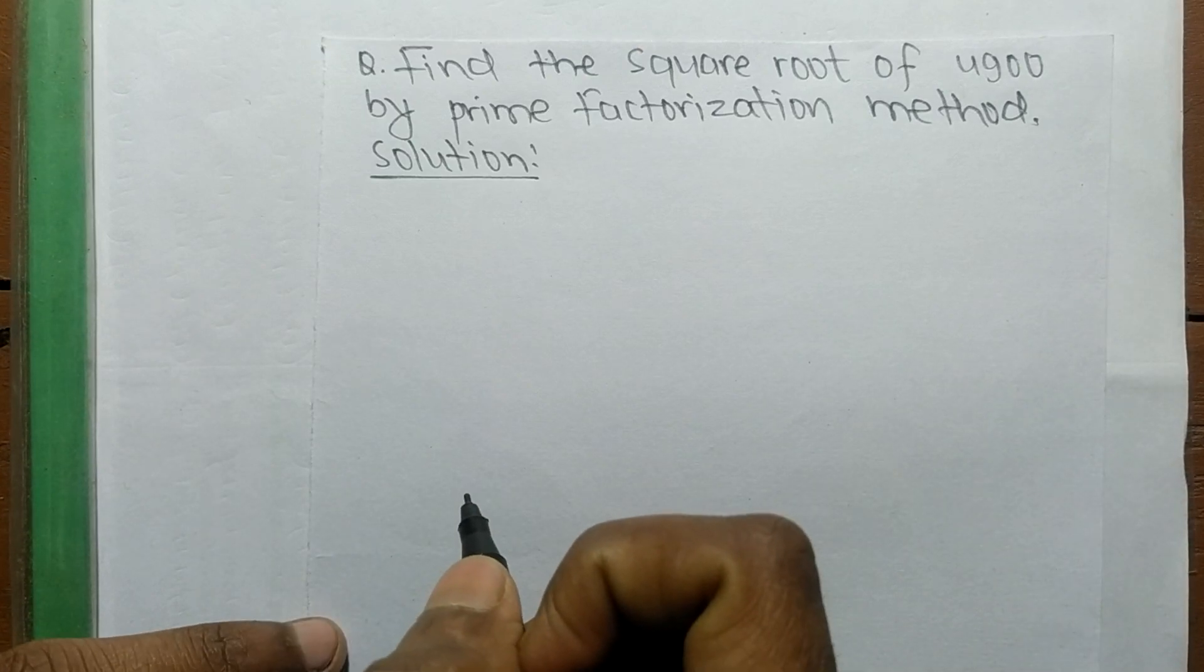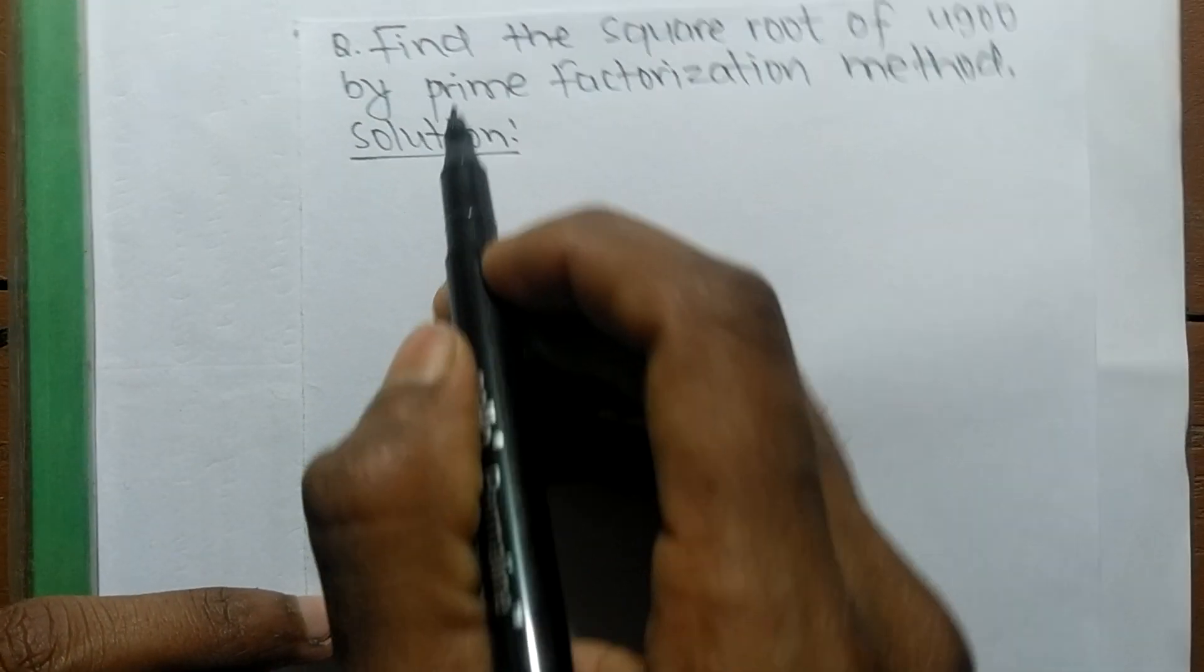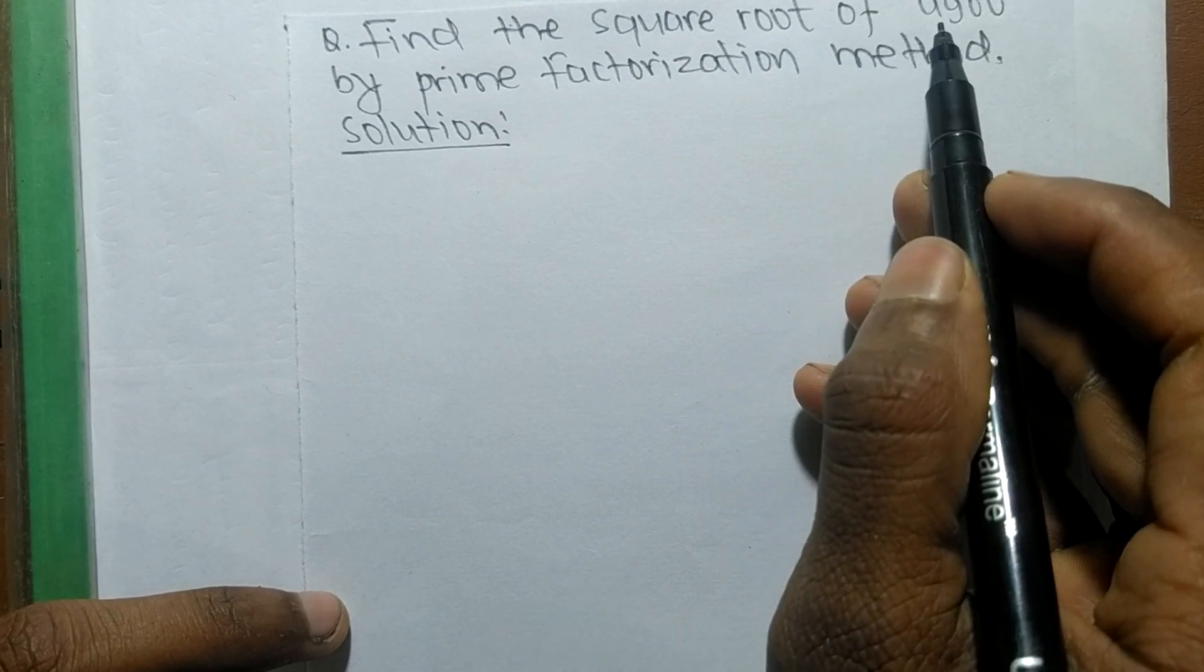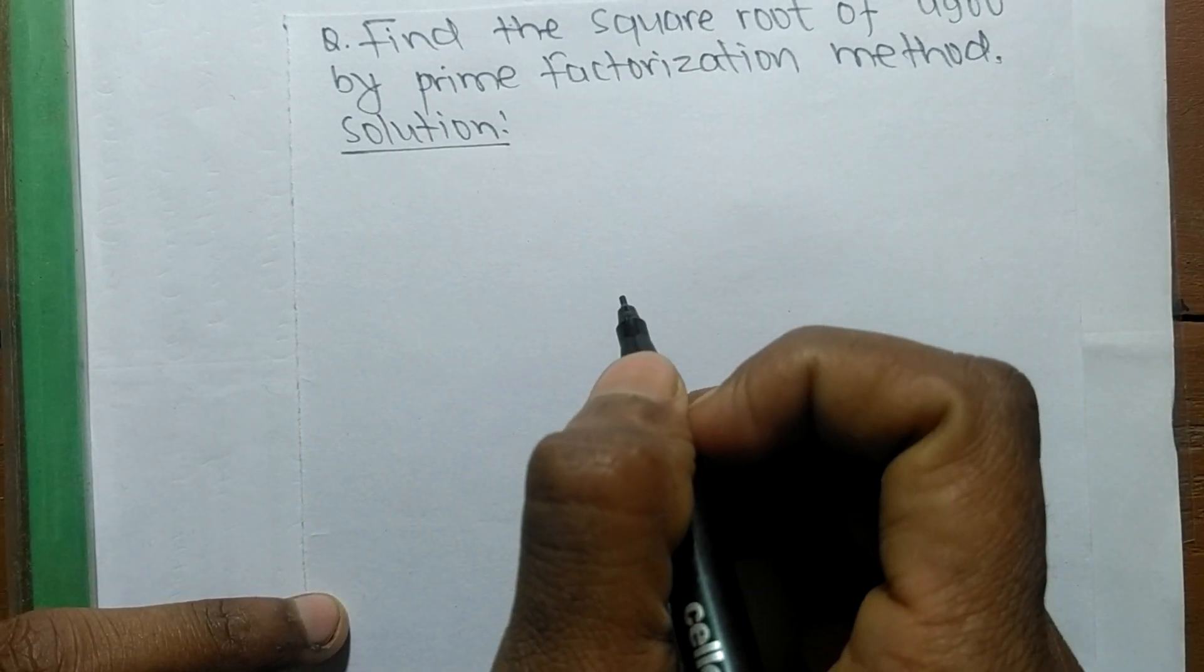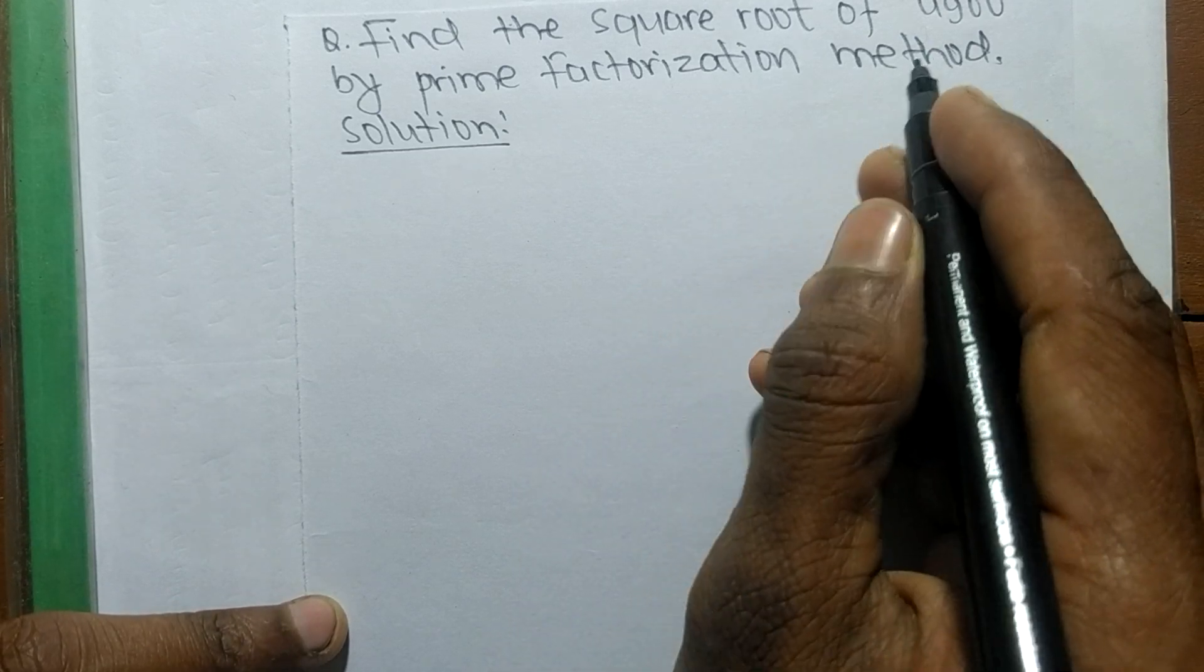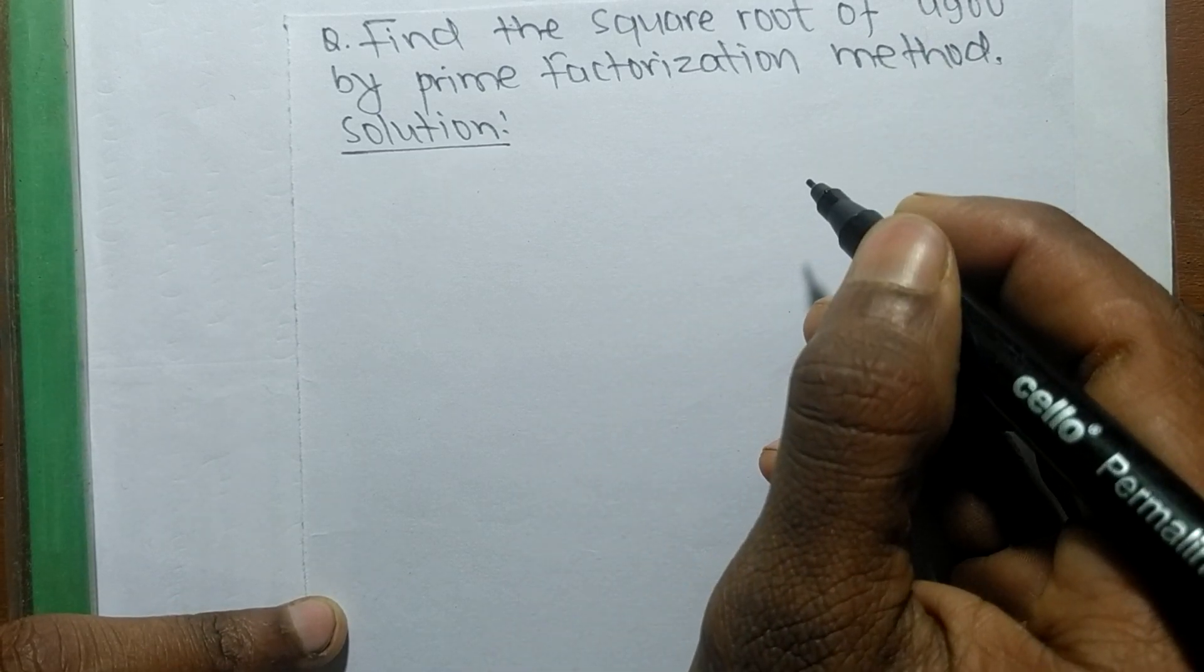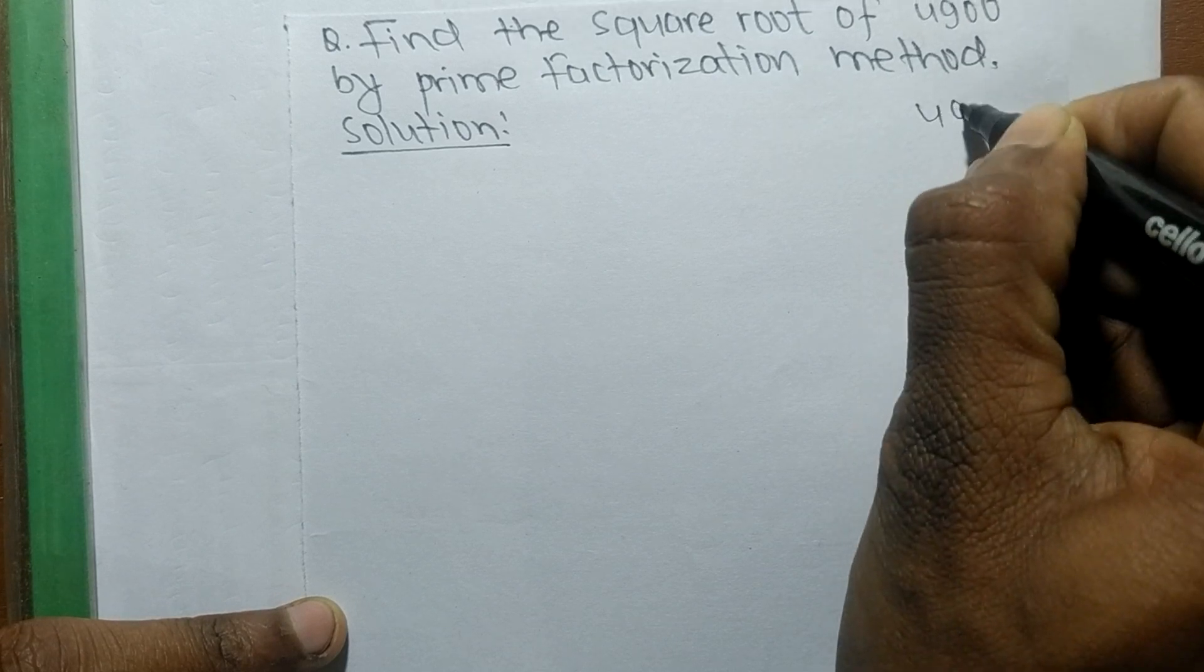Today in this video we shall learn to find the square root of 4900 by prime factorization method. To find out a square root by prime factorization method, first we have to find out the prime factors of 4900.